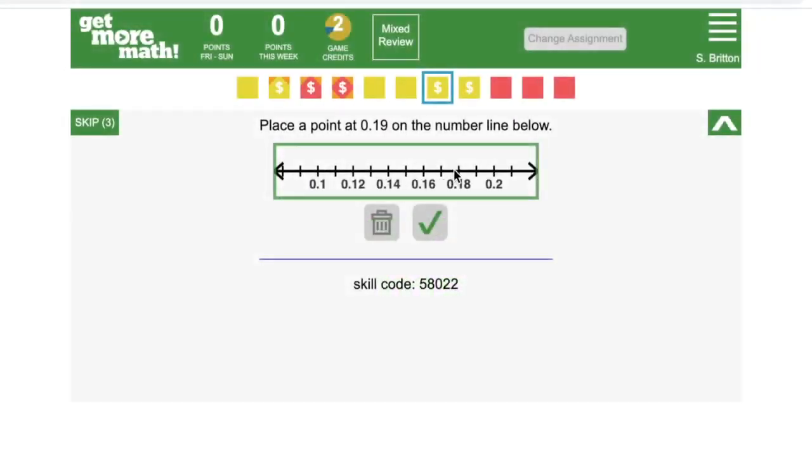First, let's look at how to plot a point. Plotting a point on a number line is simple. I'm just going to click on 0.19, which is where I want my point.